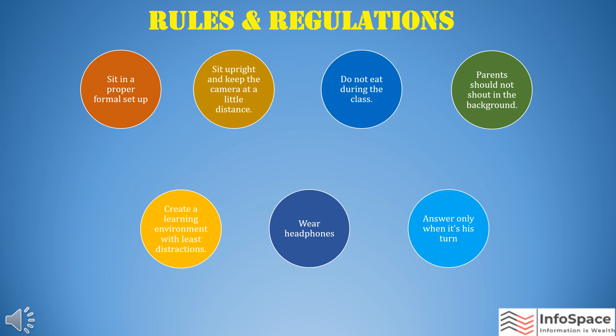The last topic to cover is rules and regulations. There are some rules that all children and parents need to follow: sit in a proper formal setup, sit upright, and keep the camera at a little distance. Do not eat during the class. Parents should not shout in the background. Create a learning environment with least distractions. If possible, the child should wear headphones to minimize distractions, and a child should always answer only when it's their turn.